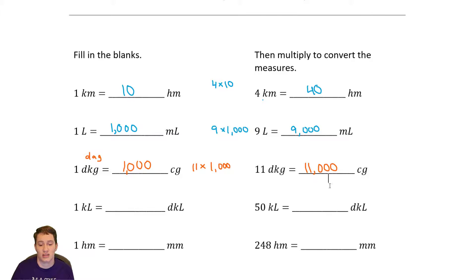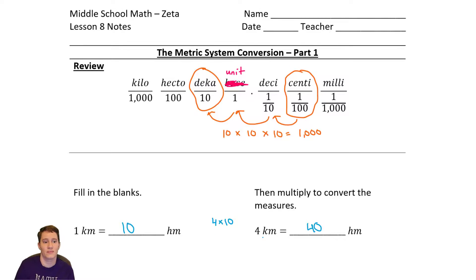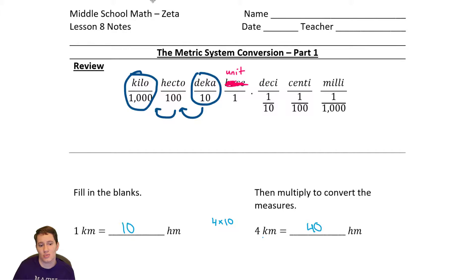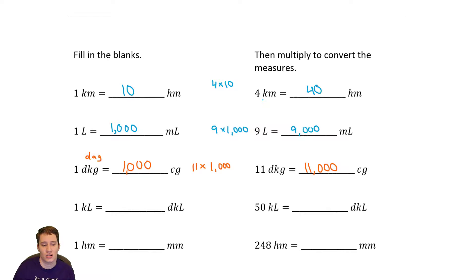Let's do kiloliters and decaliters. How far apart are kiloliters and decaliters? Here's kilo, here's deca. We've got one spot, two spots. So we should be doing 10 times 10. 10 times 10 is 100. That means there are 100 decaliters in one kiloliter. Now, if there are 100 decaliters in one kiloliter, how many decaliters are in 50 kiloliters? We need to do 50 times 100. The trick is: do five times one, which is five, and then we've got a zero in 50 and two zeros in 100 — a total of three zeros — giving us 5,000 decaliters.